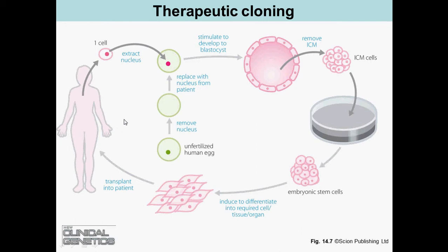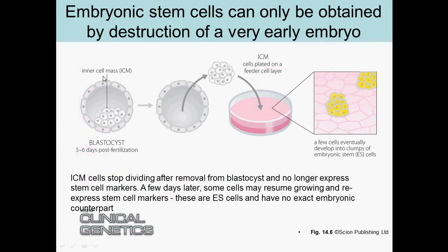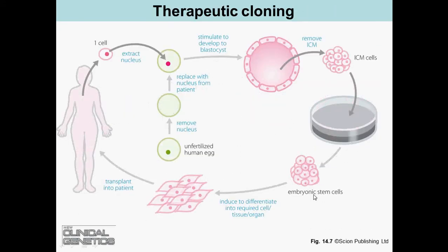In therapeutic cloning with human cells, you take an unfertilized human egg, remove the nucleus, and insert the nucleus from a somatic cell. You let a blastocyst form, take out the inner cell mass, and plate them. You then have embryonic stem cells which you can induce into different tissue or organs and transplant them into a patient to fix abnormal tissue.